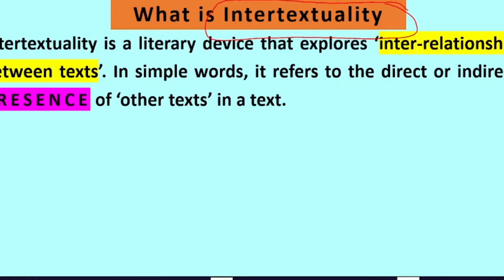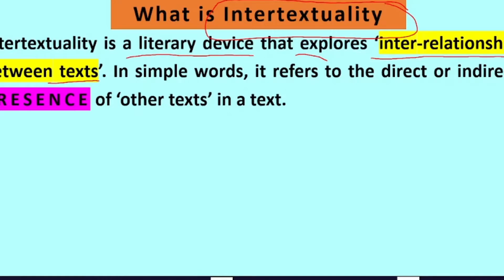What is intertextuality? Intertextuality as a literary device is the exploration of the interrelationship between texts. When you are reading a text and working with intertextuality, you are also trying to locate the traces, the signs, the remains of other texts in that particular text. In simple words, it refers to the direct or indirect presence of other texts in a text.